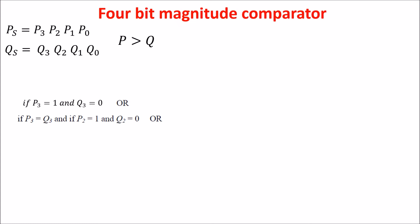For example, if P is 12 and Q is 11, we are in the second condition. The third condition is if P1 is 1 and Q1 is 0 and all the more significant bits are equal.